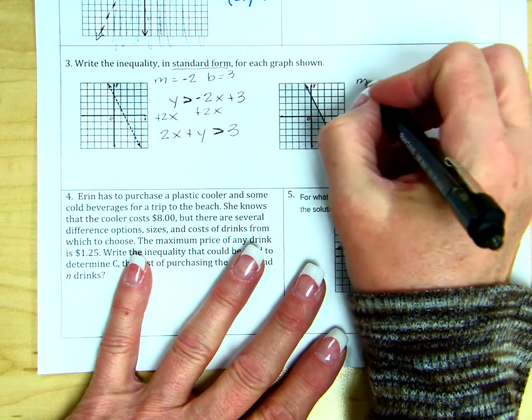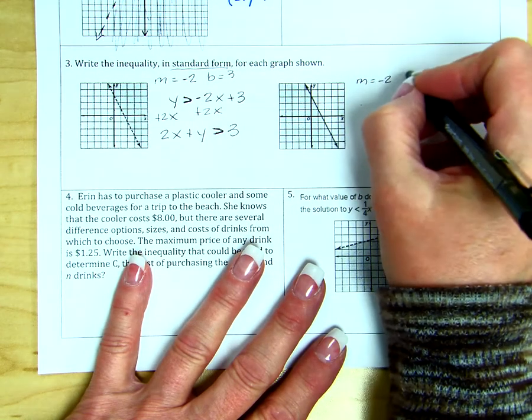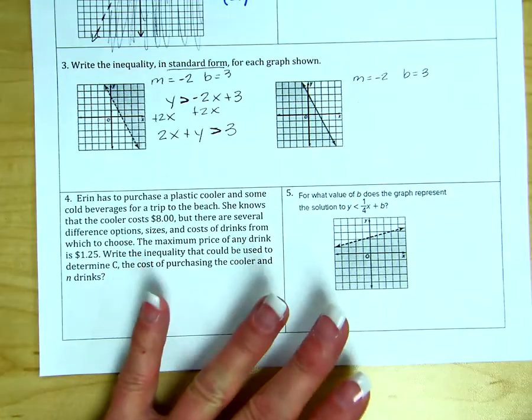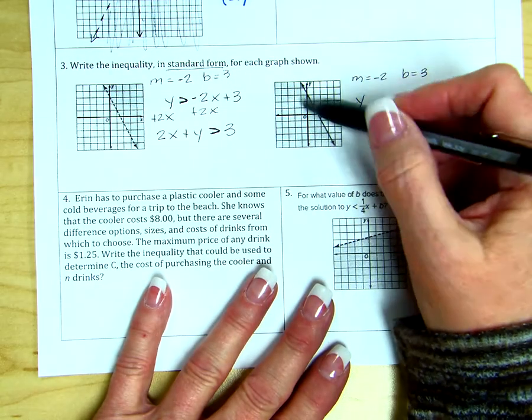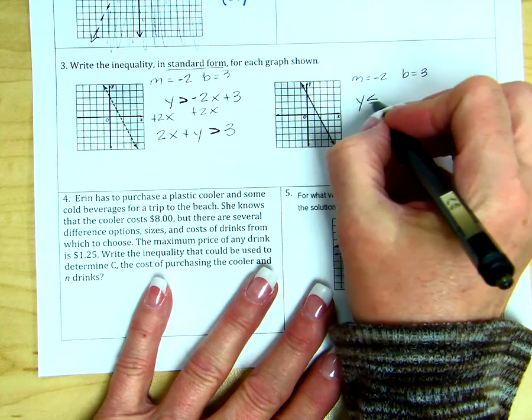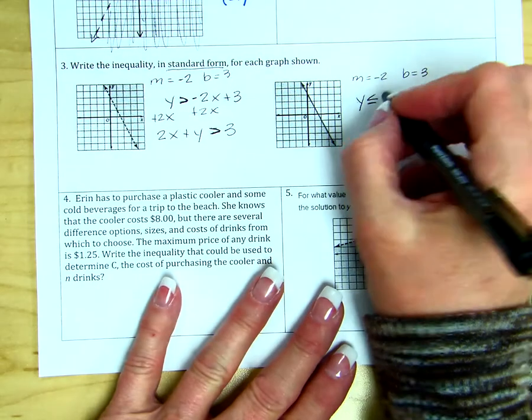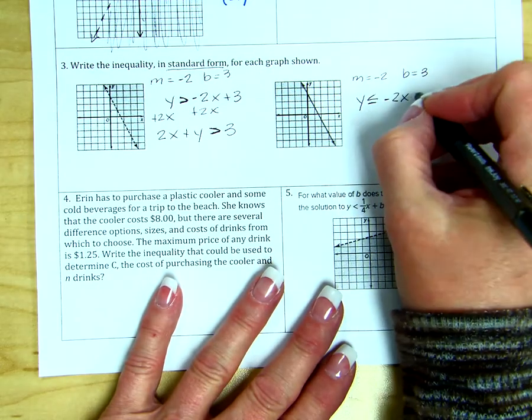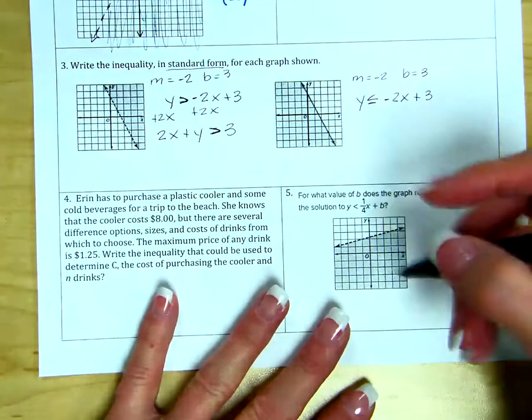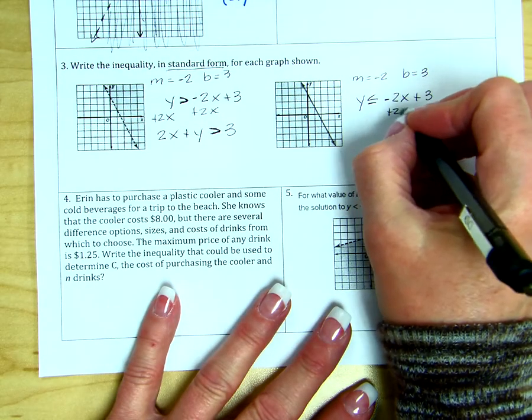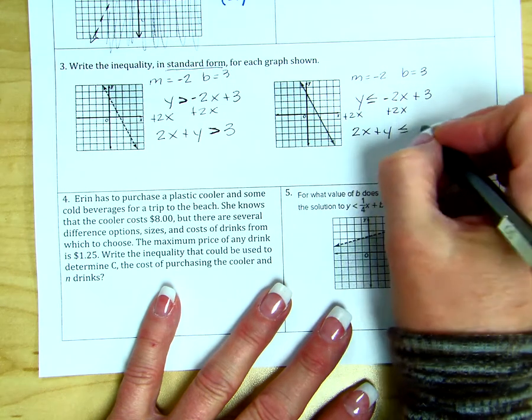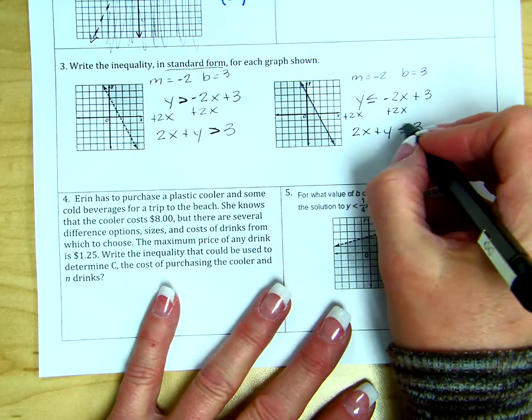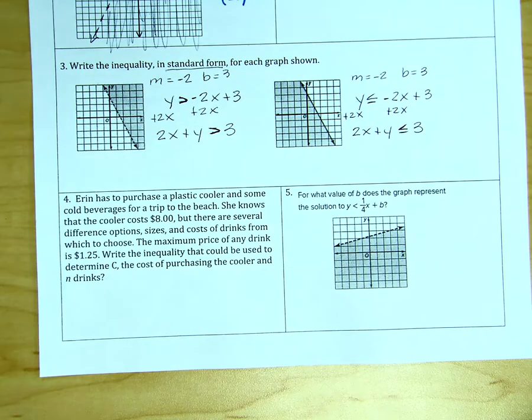For the second example, the slope is also negative 2. And the intercept is 3. This time, we have a solid line and we are shaded below. So our inequality symbol is less than or equal to. We're still going to have negative 2x plus 3. We still need to put it into standard form. So we're just going to add 2x to both sides. And again, because we haven't multiplied or divided, the symbol stays the same.